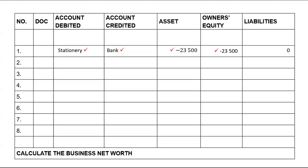Bank is an asset and since it's an asset it will increase on the debit side because we're getting more money. A loan is a liability, and when we get more liabilities they increase on the credit side. Under assets we will have plus 200,000. Owner's equity is not affected because none of the four — capital, income, drawings, expenses — are involved, so under owner's equity we've got zero. Under liabilities we owe Netbank 200,000.